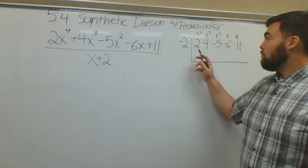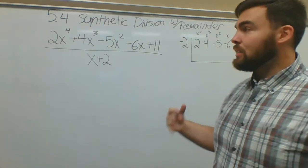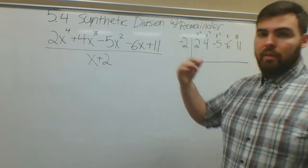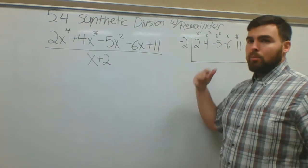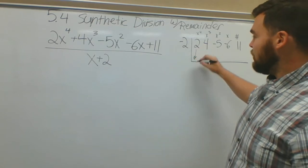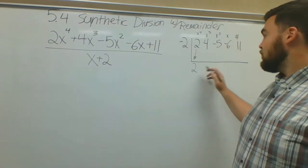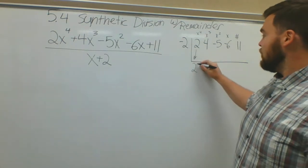Now you're going to do synthetic division with more steps. It's easier to make a smaller mistake. There's more opportunities to make a smaller mistake, so make sure that you're doing everything correctly. Make sure you do it correctly. Multiplying when we're supposed to multiply, add when we're supposed to add. First step: drop the 2.